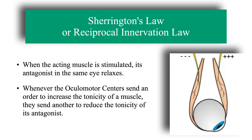Harrington's law, or Reciprocal Innervation Law, states that when the acting muscle is stimulated, each antagonist in the same eye relaxes. Whenever the oculomotor center sends an order to increase the tonicity of a muscle, they send another to reduce the tonicity of the antagonist. In other words, when an eye makes a movement in a certain direction, the synergistic muscles contract and the antagonists relax.